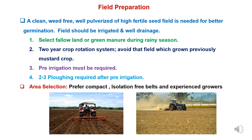Pre-irrigation must be done before sowing, and two to three plowings are required after pre-irrigation. While selecting the area, we have to select compact belts, isolation-free belts, and experienced growers who are well-versed with principles and practices of hybrid mustard seed production.